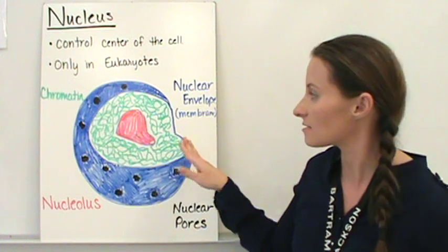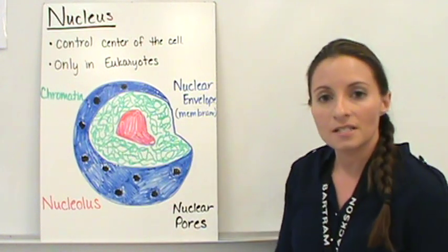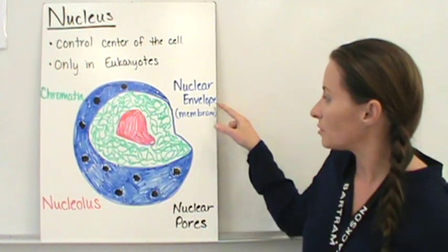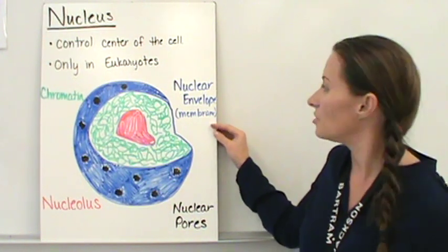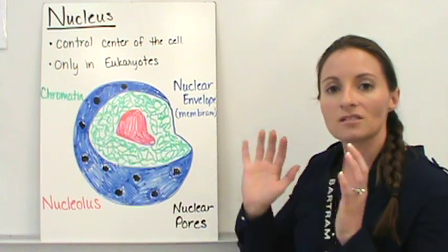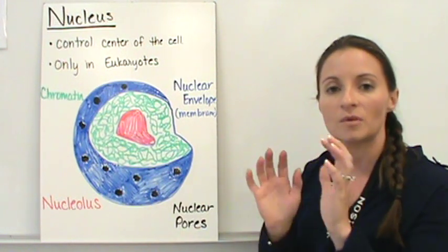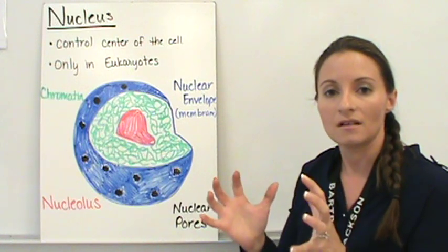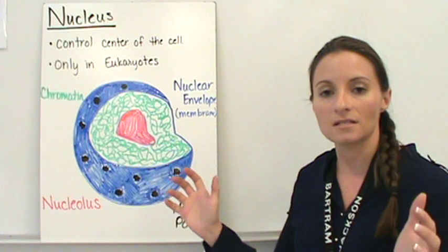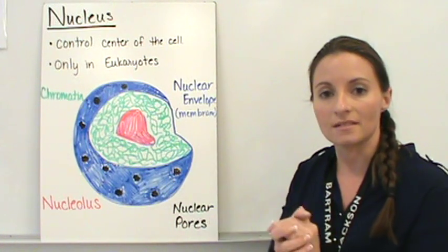So here's a picture of the nucleus. And I've color coded some of these pieces. Around the outside of the nucleus, we have a blue structure here called a nuclear envelope or a nuclear membrane. That's just going to contain everything inside. That's going to be the barrier between the cell and the nucleus. So between the nucleus and the rest of the cell, the nuclear envelope provides that barrier.